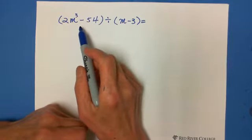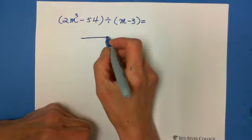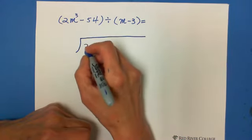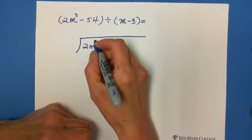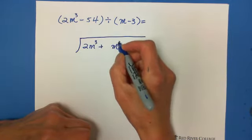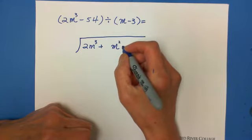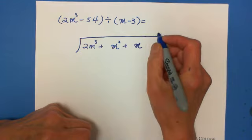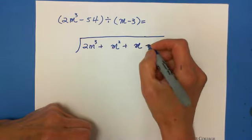So that's why when doing long division, we need to add plus 0m squared and plus 0m, then minus 54.